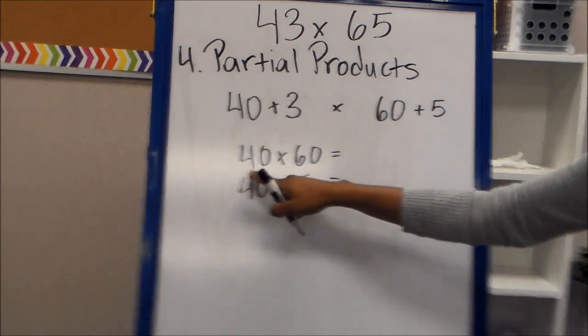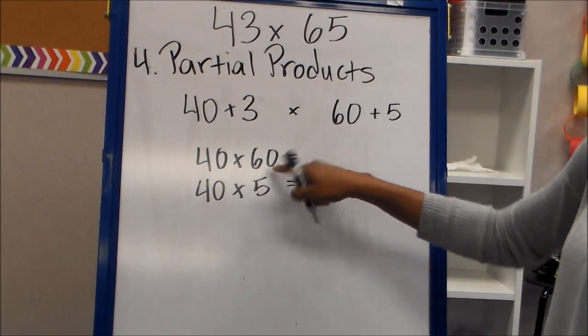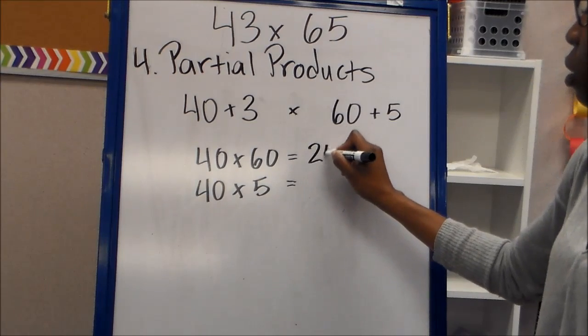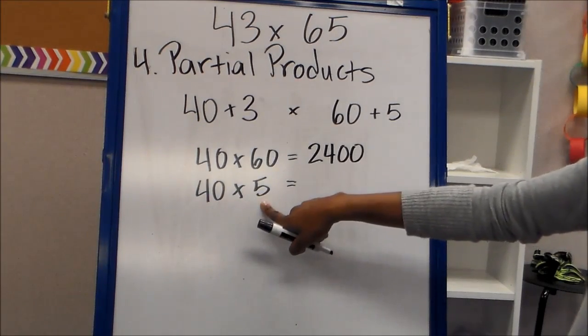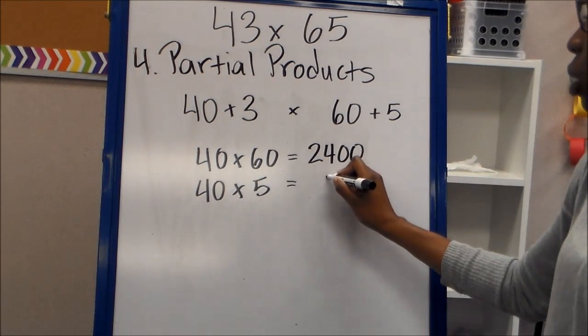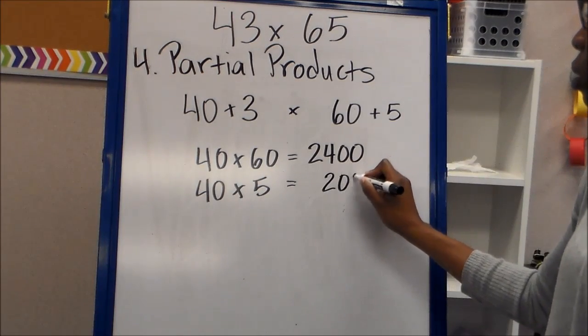40 times 60, 4 times 6 is 24, and you add on your two zeros. 4 times 5 is 20, and then you add on your zero. 200.